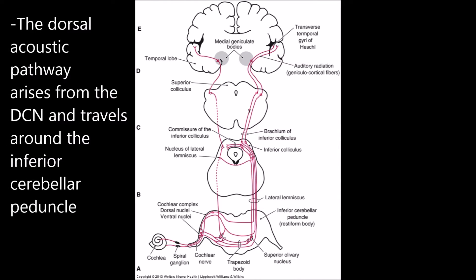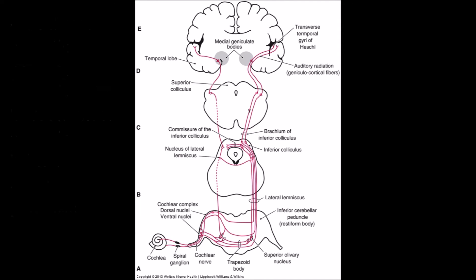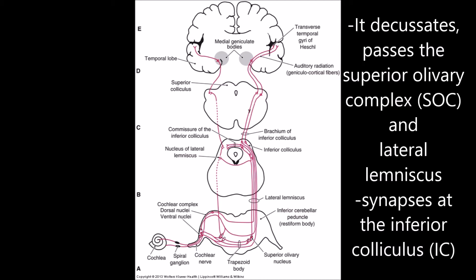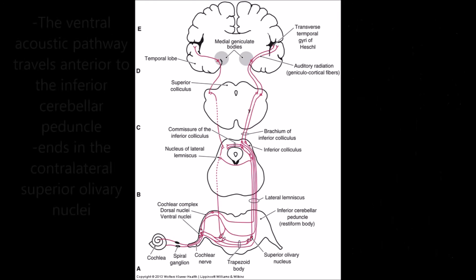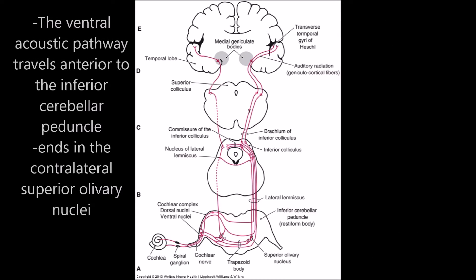The dorsal acoustic pathway arises from the DCN and travels around the inferior cerebellar peduncle. It decussates, passes the superior olivary complex and lateral lemniscus, and synapses at the inferior colliculus.